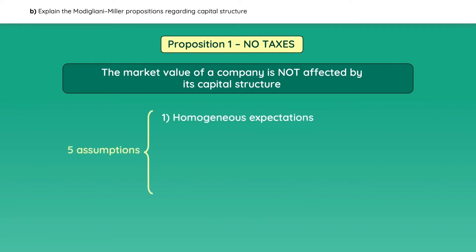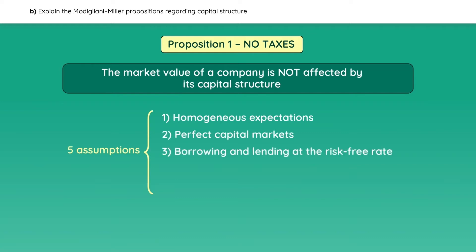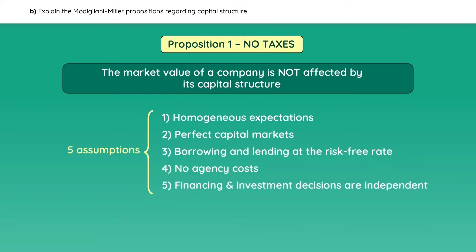All investors must have the same expectations about the firm's future cash flows. Capital markets must be perfect. Borrowing and lending must happen at the risk-free rate. There must be no agency costs. And financing and investment decisions must be independent.